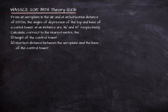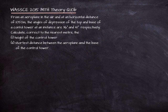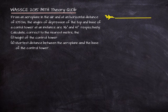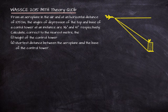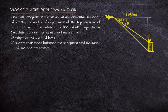We now go to the theory question of 2015 WAEC. We need to correctly interpret this type of question. From an airplane in the air, at a horizontal distance of 1,050 meters, the angles of depression — looking at the horizontal then drawing our angle of depression down — to the top and the base of a control tower are 36 and 41 degrees respectively. The top is 36 degrees, the base is 41 degrees. We are asked to calculate the height of the control tower, and also the shortest distance between the airplane and the base of the control tower.